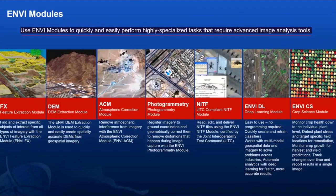DEM extraction module can be used to extract high-resolution DEMs for applications related to water, agriculture, and many other domains from high-resolution stereo data. The atmospheric correction module contains all the parameters needed to correct atmospheric errors in downloaded data before processing, to get the most accurate results.